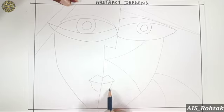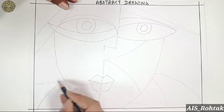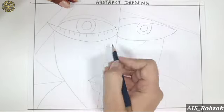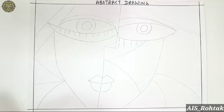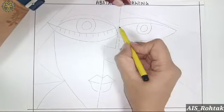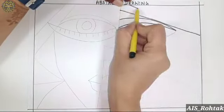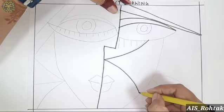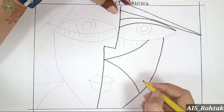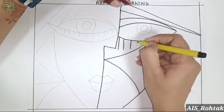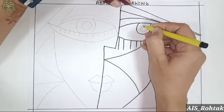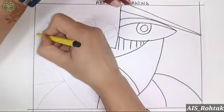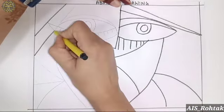Basically, abstract art is a non-objective art form that doesn't attempt to accurately depict visual reality. So in this we take any picture or drawing and divide it into small parts with the help of some lines, curve lines, circles, whichever shape you want to make.